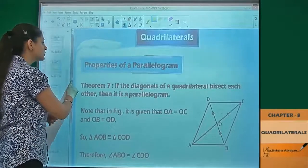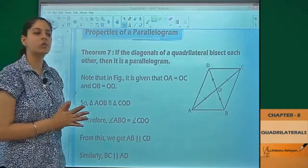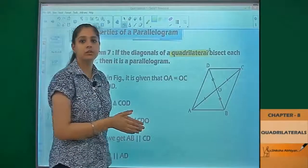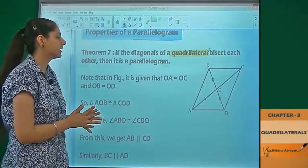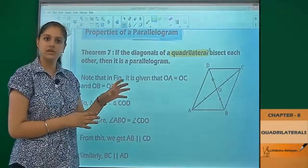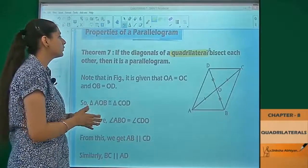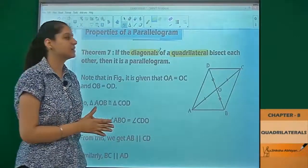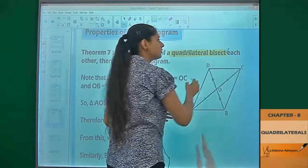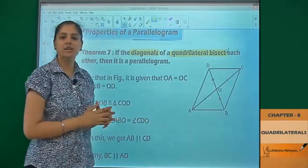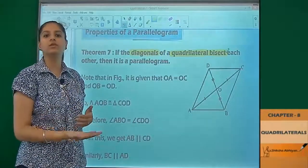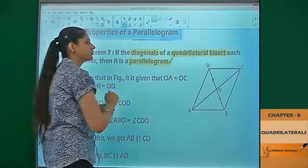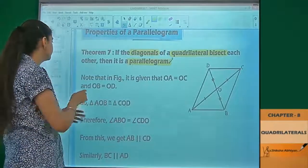The converse of the property says that if you have a quadrilateral given — which is not stated to be a parallelogram, just a normal quadrilateral — and the diagonals are bisecting each other, then automatically it is a parallelogram. This is Theorem number 7.